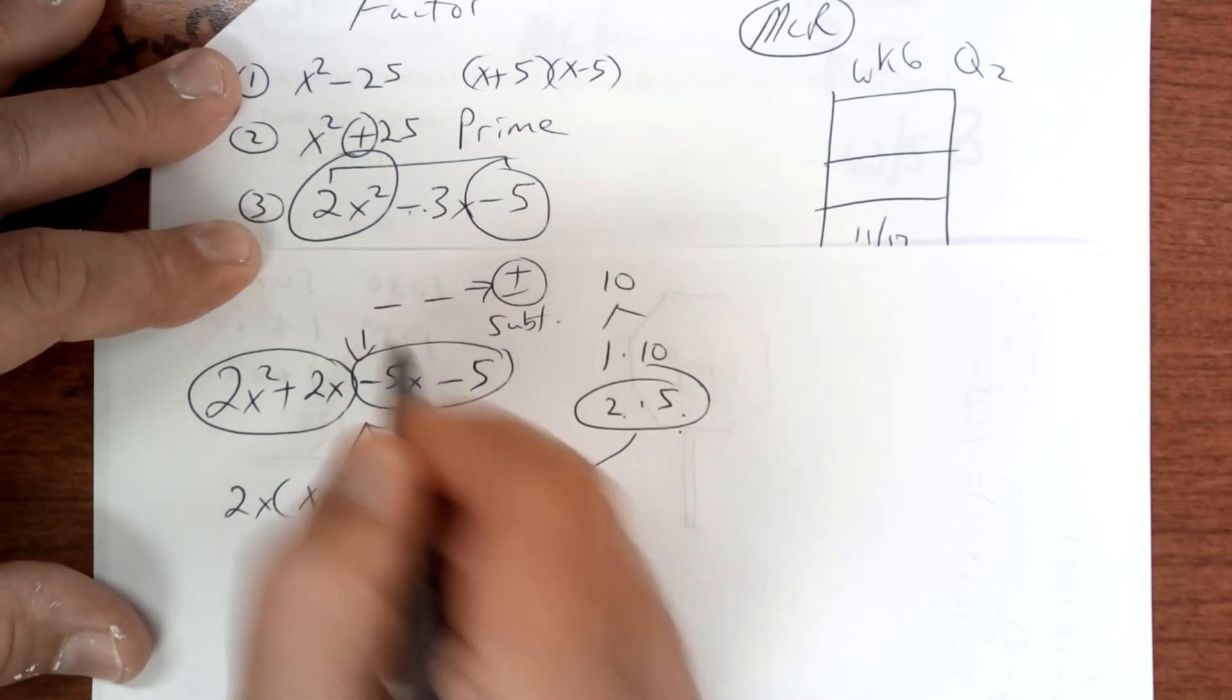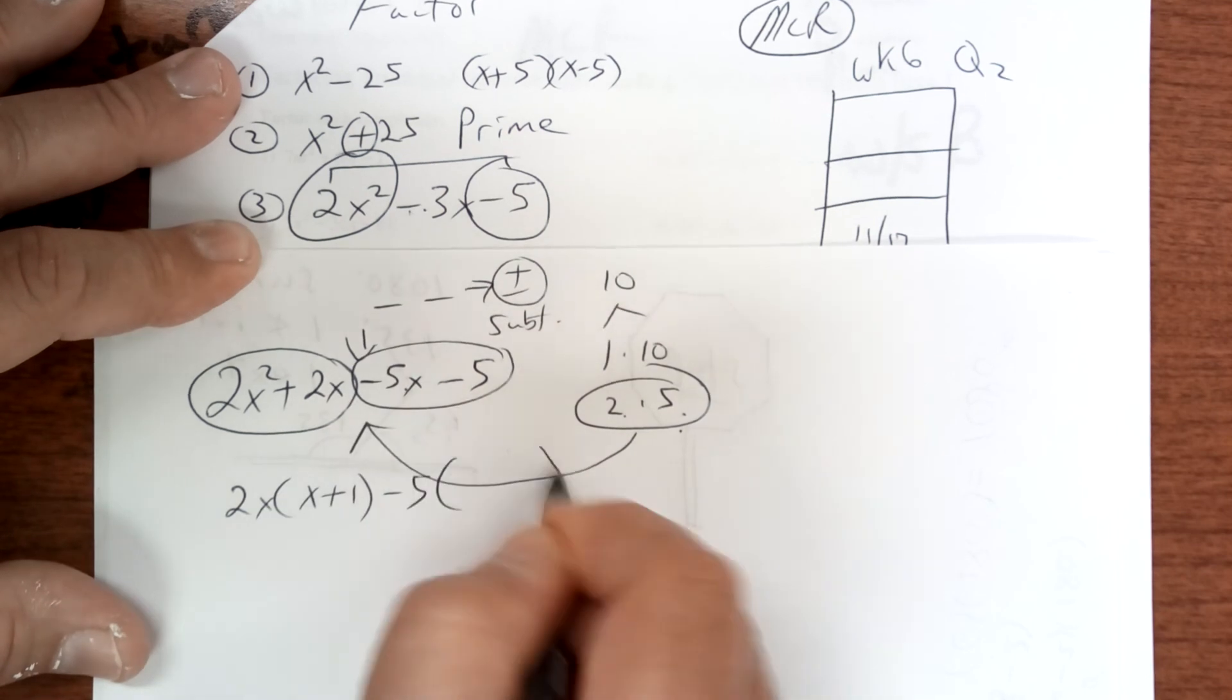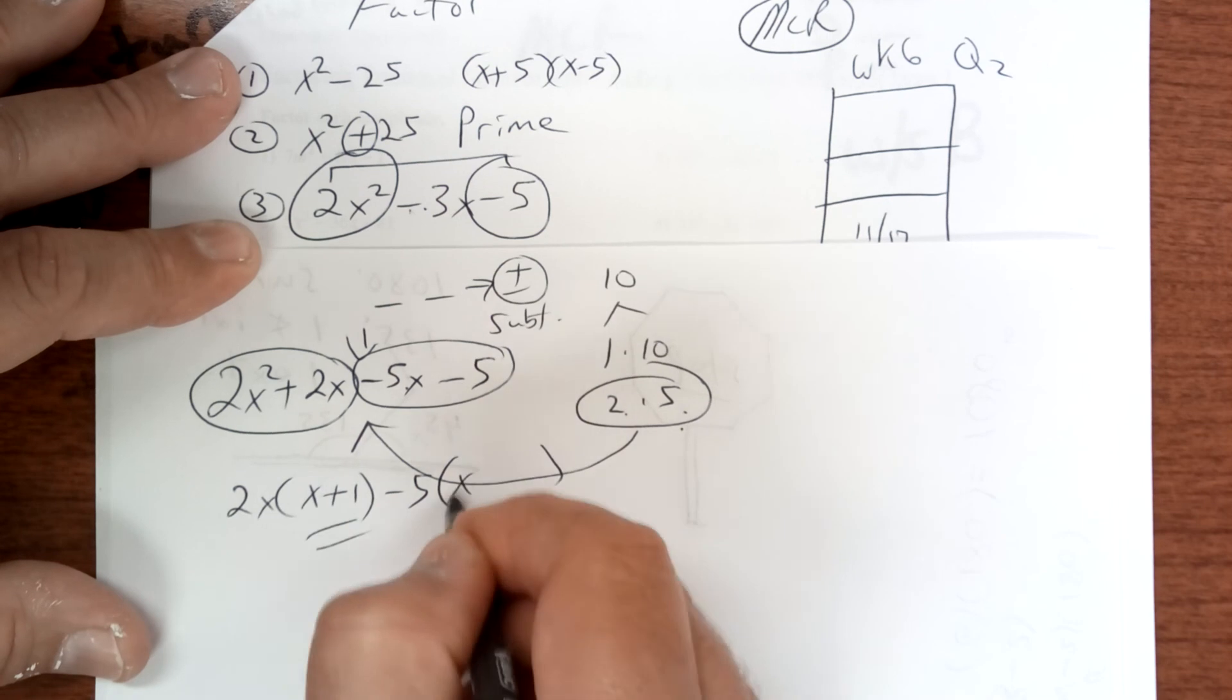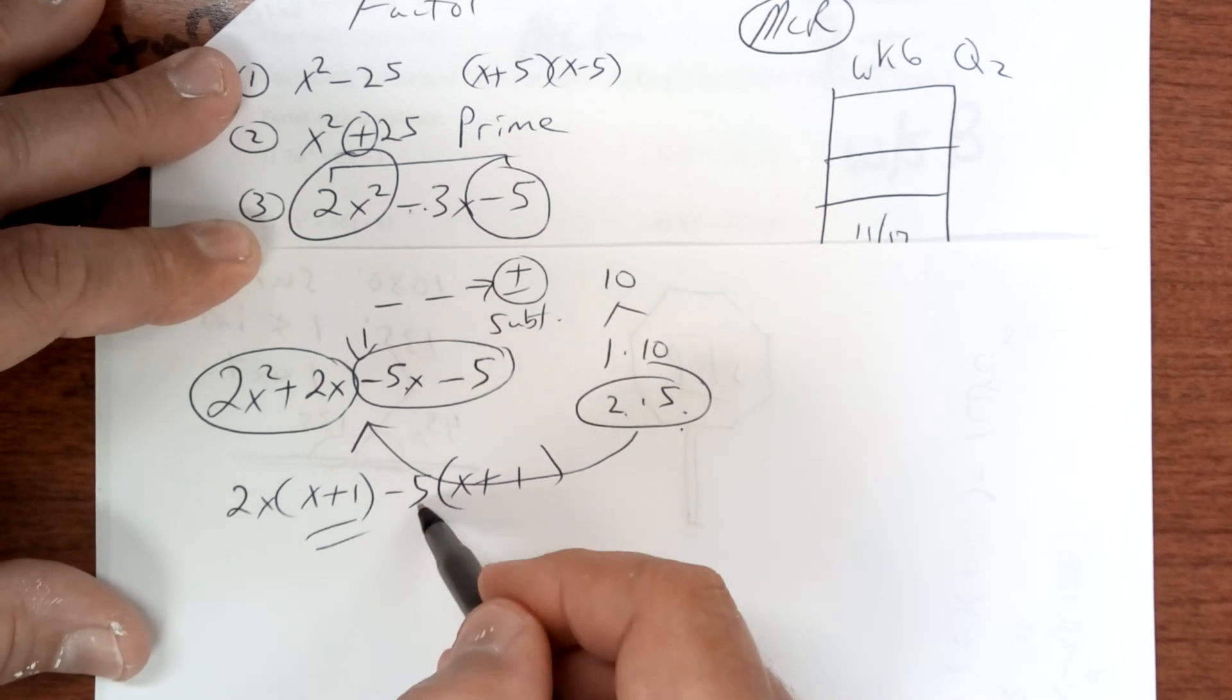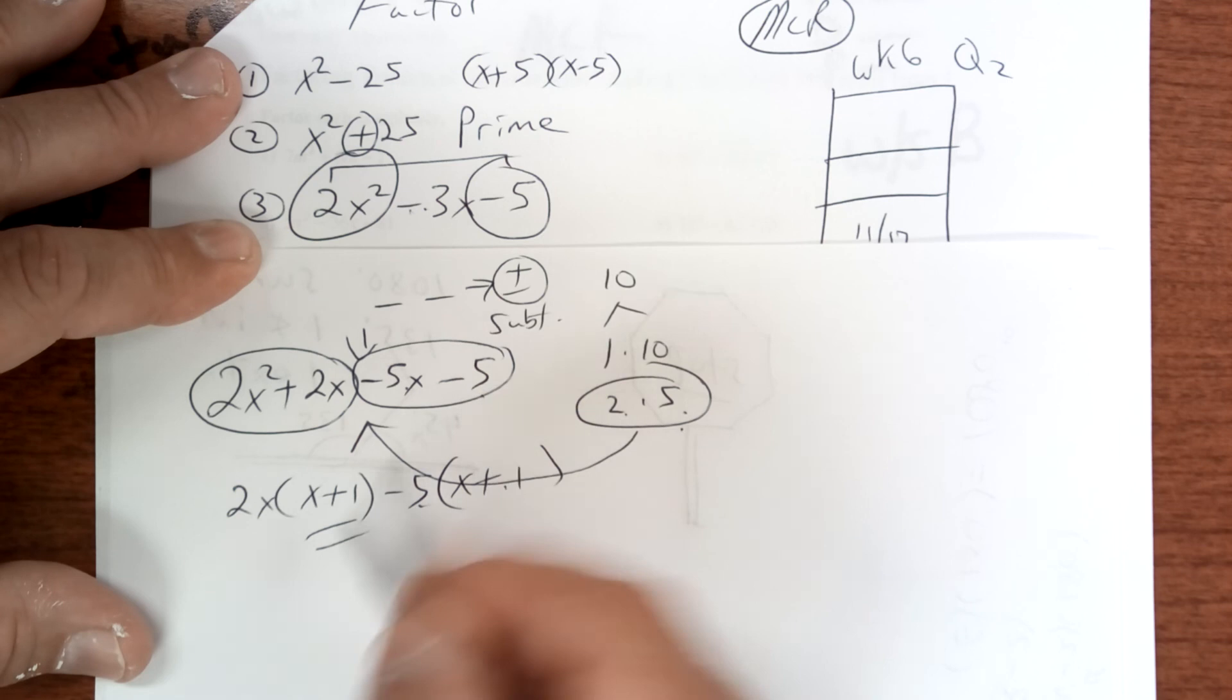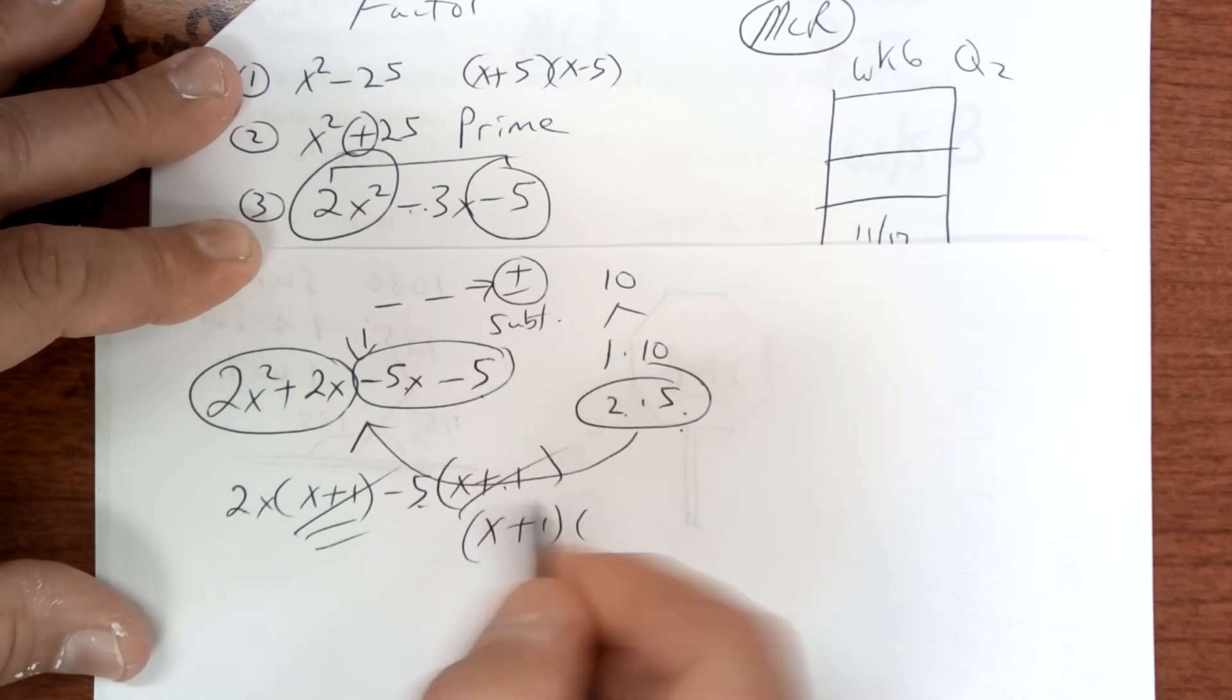Here we're going to take out a negative 5. I think we worked this one before, and you should be left with the same thing. Negative 5 times 1 is a negative 5. You have one of these, so you're left with x plus 1 and 2x minus 5. That's what we're doing today.